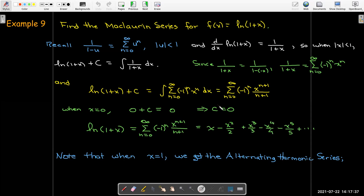Now, note that these terms here, x minus x squared over 2 plus x cubed over 3 minus x to the 4th over 4, very nice pattern. And in fact, when x equals 1, we're going to get the alternating harmonic series. 1 minus a half plus a third minus a fourth plus a fifth.